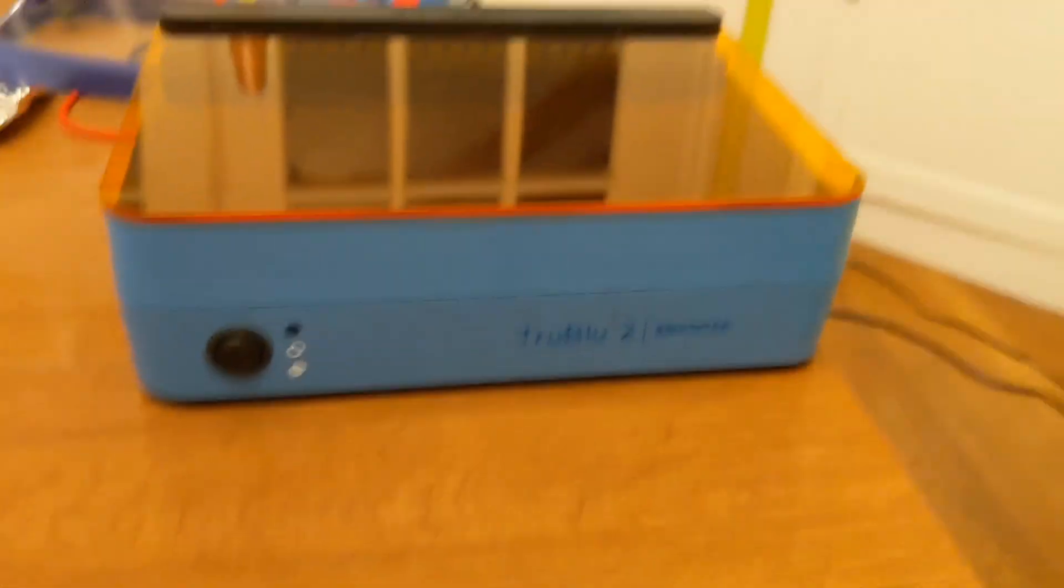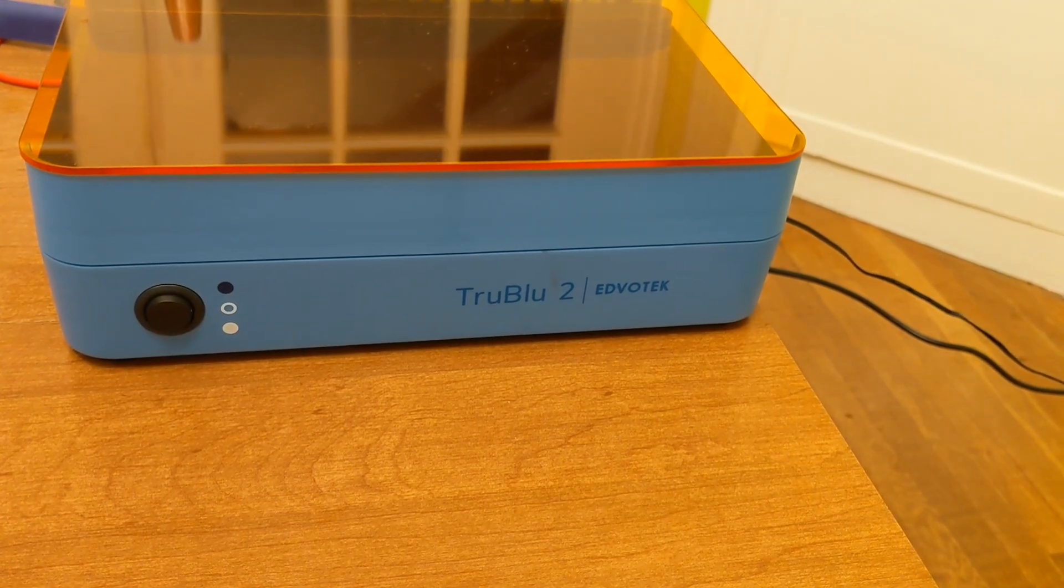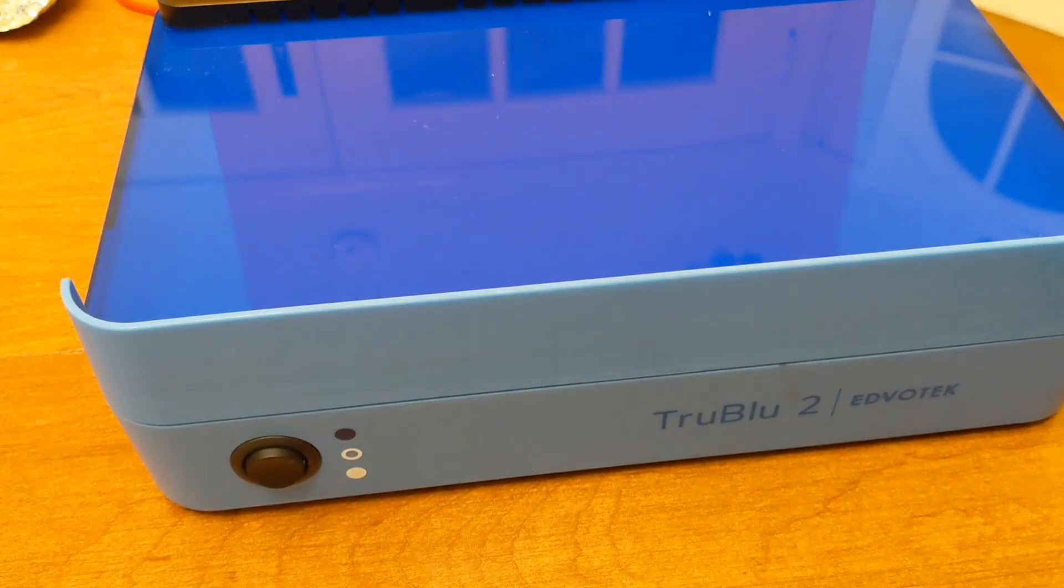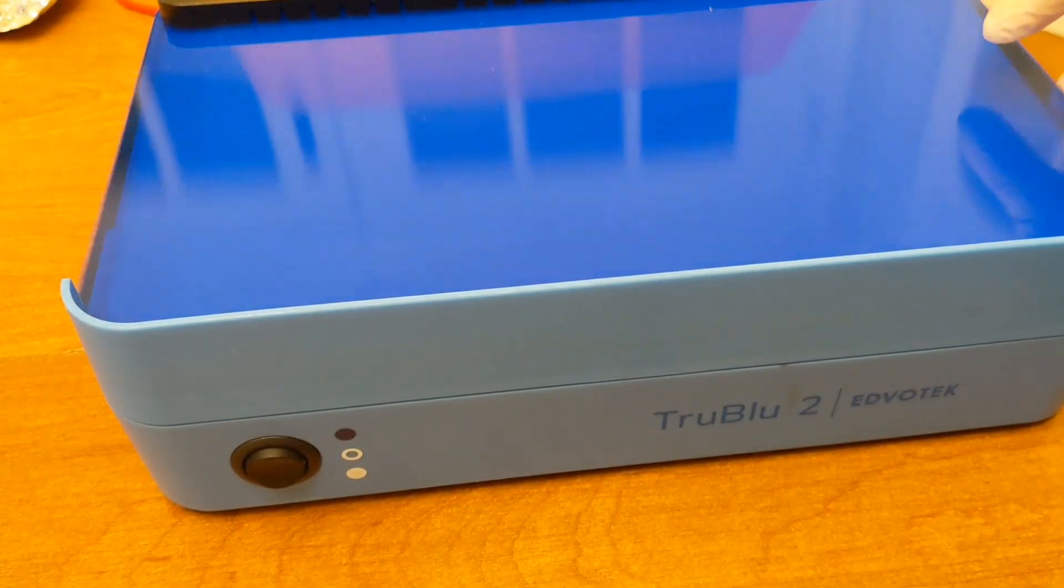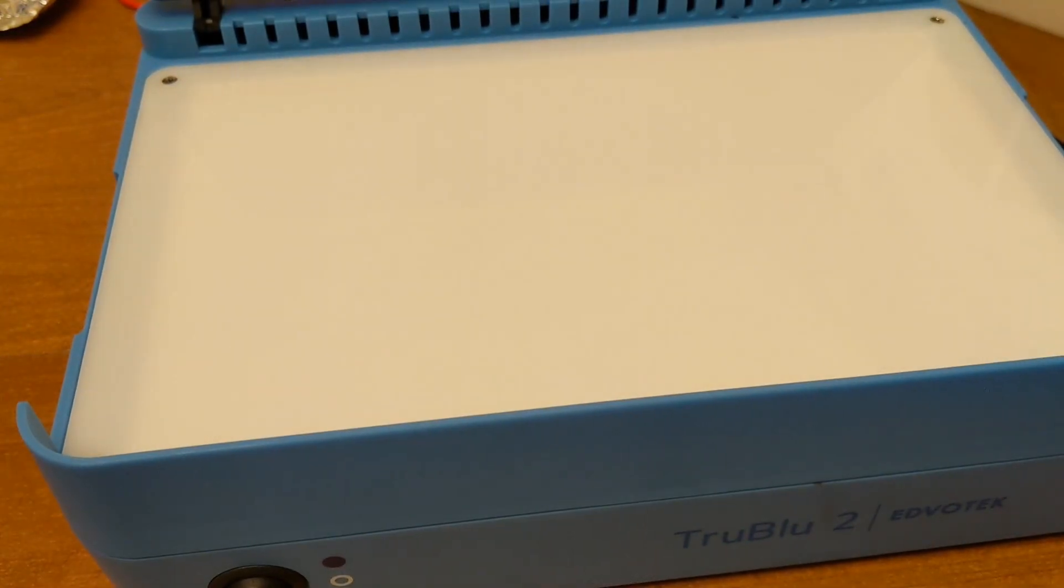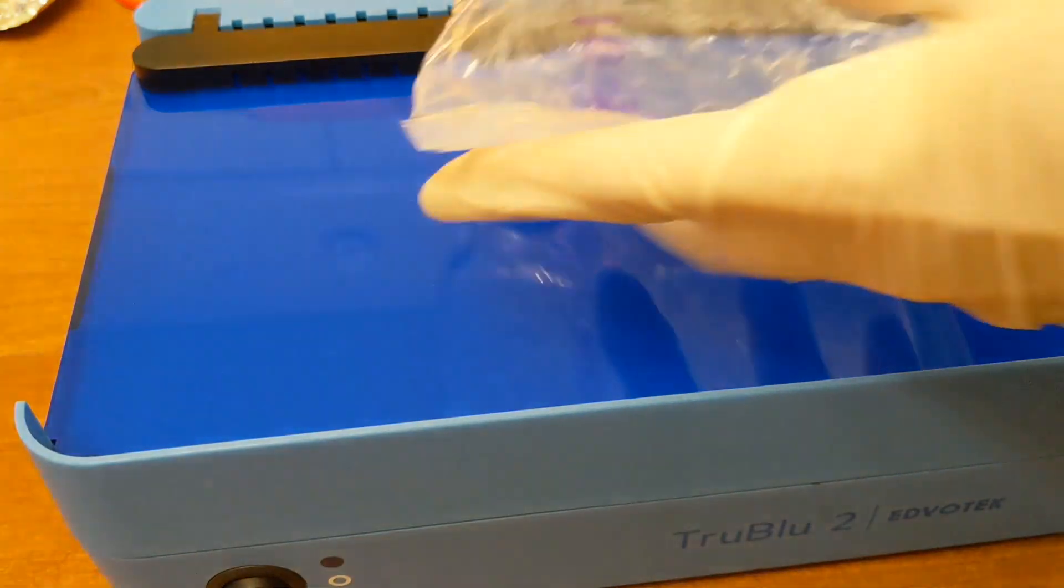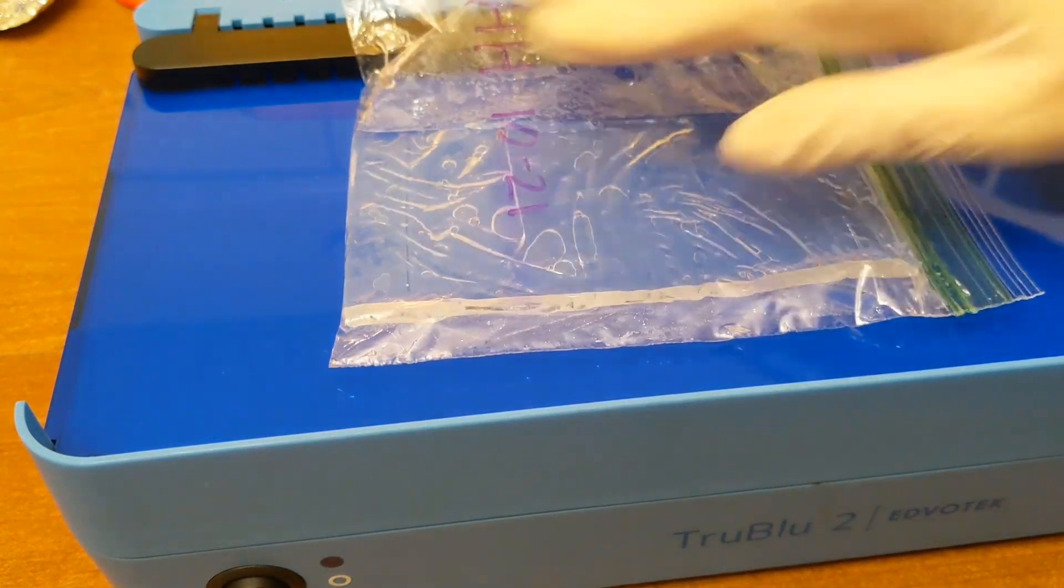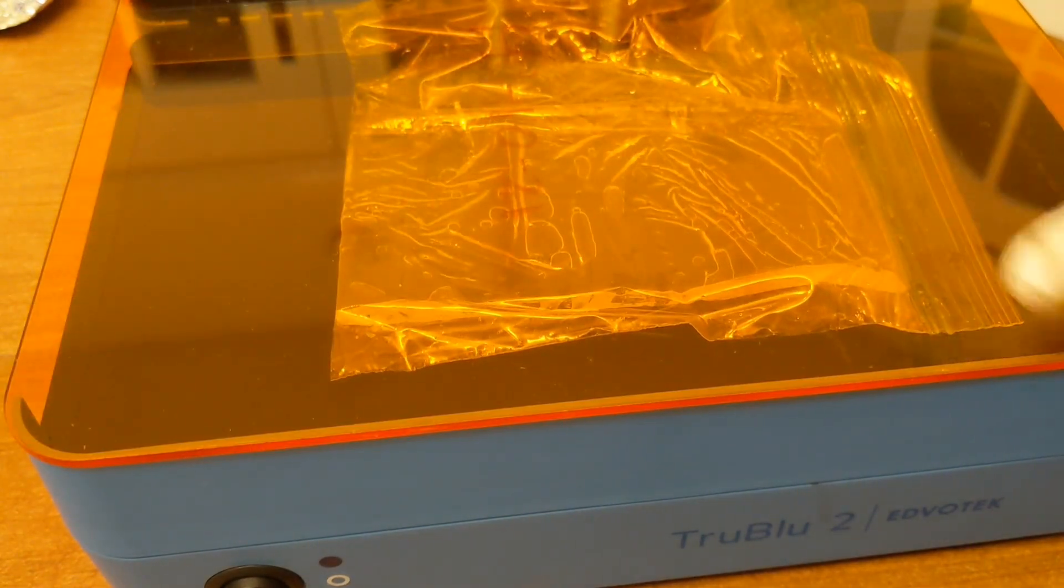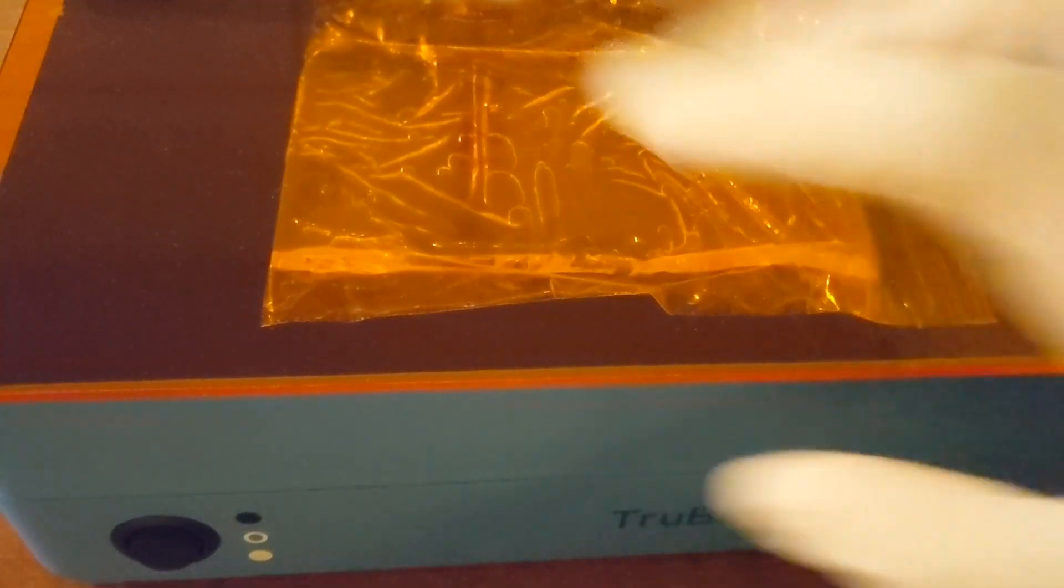This is my first personal favorite part. We are going to use the True Blue 2 Trans Illuminator from Edvotec, and this will let us visualize the DNA. You want to lift this up. If we had stained it with a blue stain, we would do it on the white light. But when we use CyberSafe, you want to put the blue plastic down, then lay your gel down, and then put the orange on top of it. Now, you do want to turn the lights down for this part.